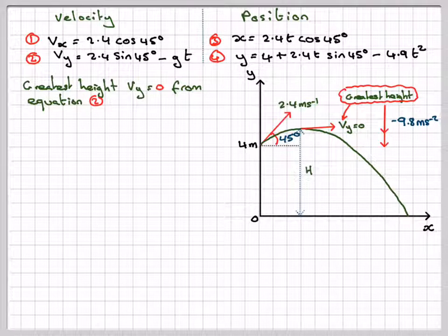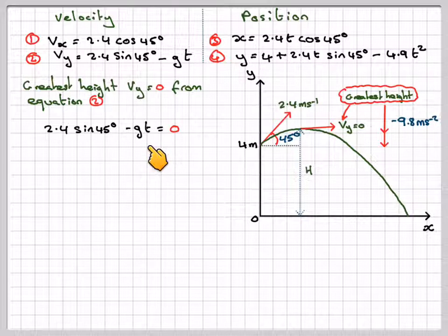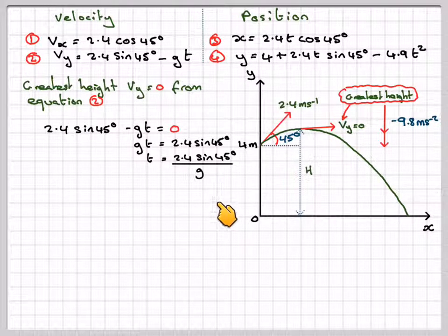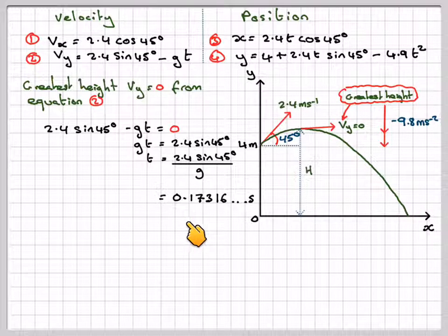So from equation 2, we have 2.4 sin 45 minus gt equals 0. Now I'll solve this for t. Get gt equals 2.4 sin 45. t equals 2.4 sin 45 over g, which gives you on your calculator 0.1736 seconds.